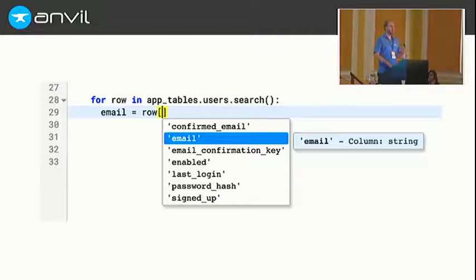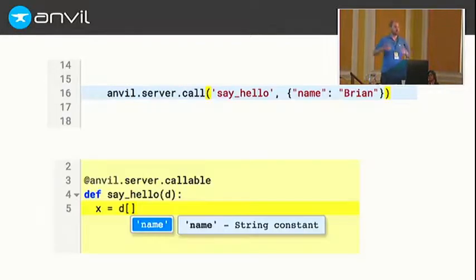Speaking of function calls, we also want to be able to infer between modules. So, for example, in Anvil, when you have server code, you write it in Python. When you have client code, you call it also from Python. And if you pass something into that server code, you kind of want to be able to autocomplete it inside that server function.